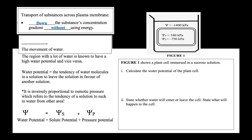The third type of passive transport is known as osmosis. Osmosis specifically looks at the movement of water molecules across the plasma membrane. Since osmosis is a passive transport, osmosis must refer to the movement of water from the region with a lot of water molecules to a region with less water molecules. The region with a lot of water molecules is known to have high water potential and vice versa. Water potential refers to the tendency of water molecules in a solution to leave that solution in favour of another solution.